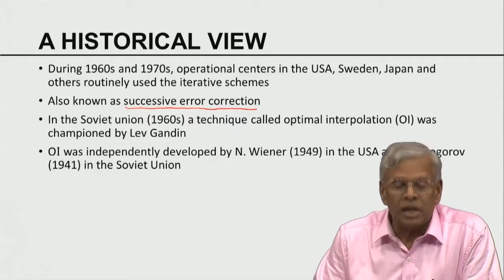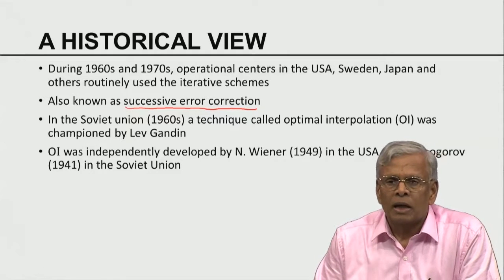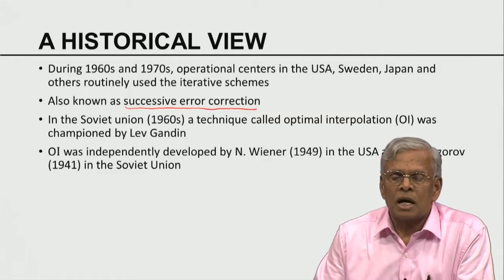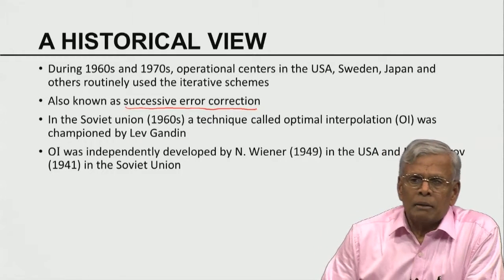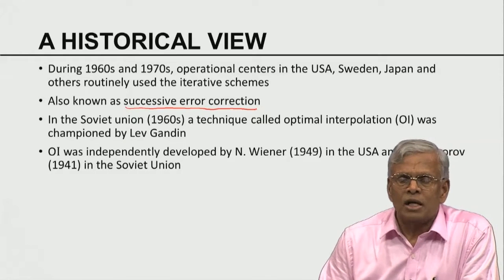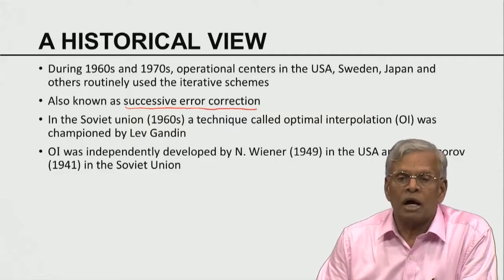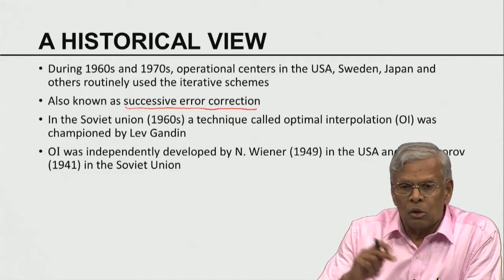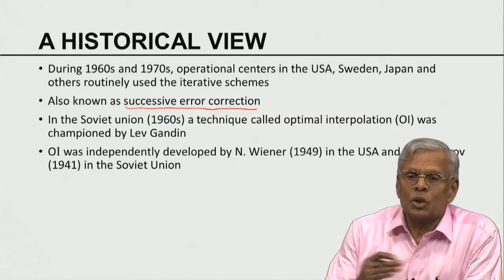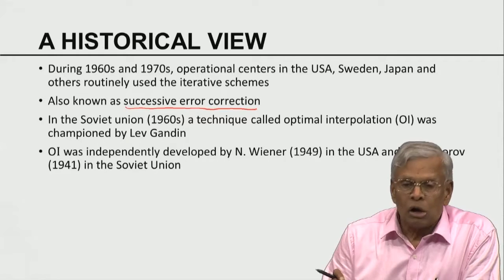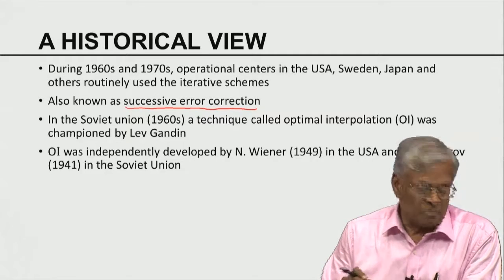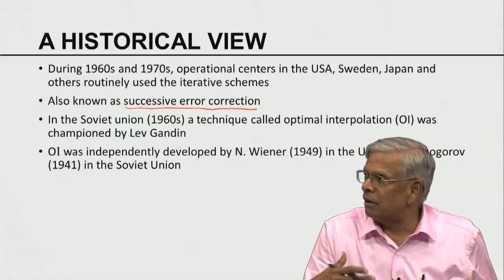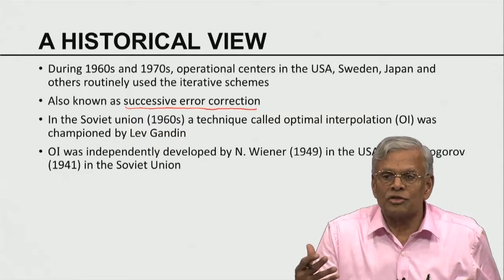The story goes that Norbert Wiener developed this method in the early 40s, but he did this work under a defense contract, so it was classified. By the time he could publish it, it had to be unclassified, so it took several years before the classification was lifted. The open publication date is around 1949. Kolmogorov was also working on similar problems independently. This goes to show big minds think similarly even though they have been working in geographically distinct locations.